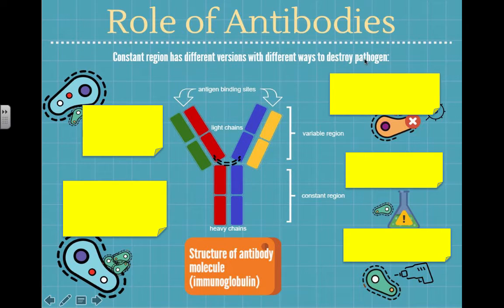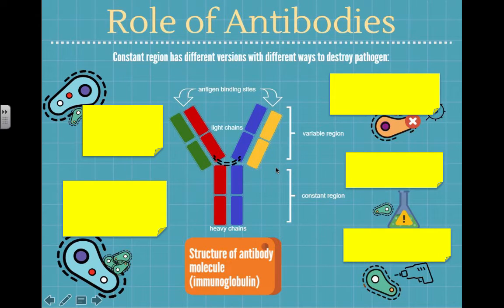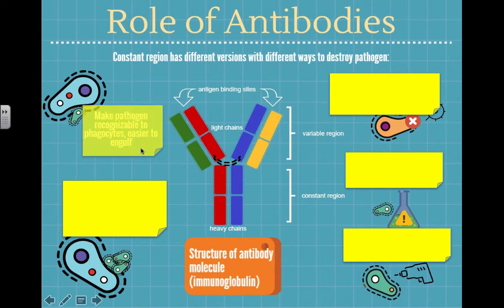First, if you look at the general structure of an antibody, there is a constant region and a variable region. The variable region is the part that gets produced by different types of B lymphocytes in order to create the variability to potentially fight off any type of pathogen that comes in. Another way to say antibody is immunoglobulin.